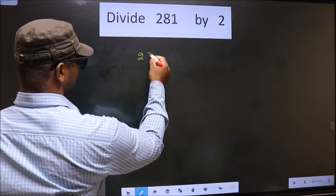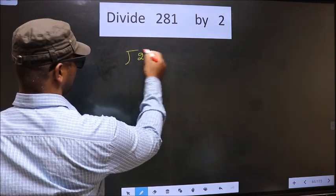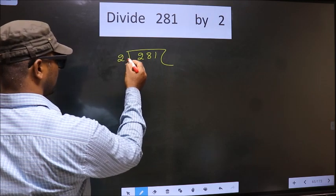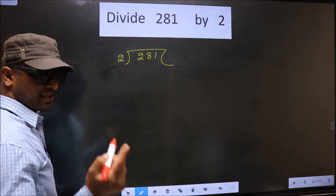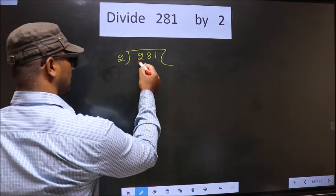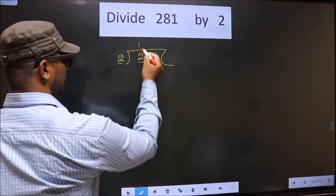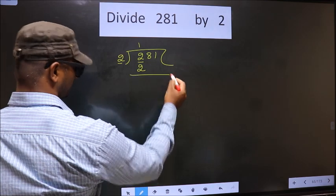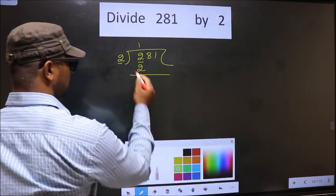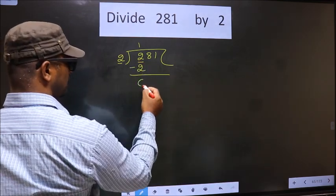That is 281, 2 here. Now, here we have 2. Here also 2. When do we get 2 in 2 table? 2 ones, 2. Now, you subtract 2 minus 2, 0.